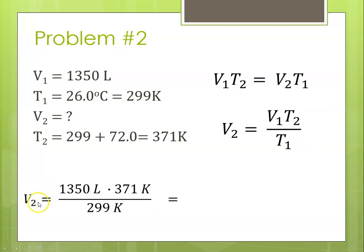Now we've got to plug in our numbers. So our V1 is 1350, our T2 is 371, and our T1 was 299. Canceling our units, Kelvin cancels out. Plugging in, 1350 times 371 divided by 299, we get this number.